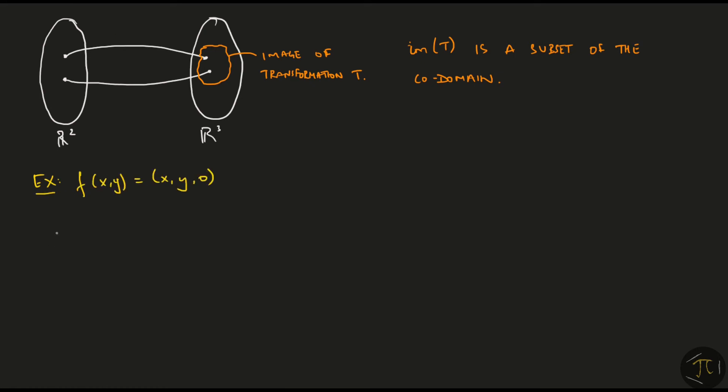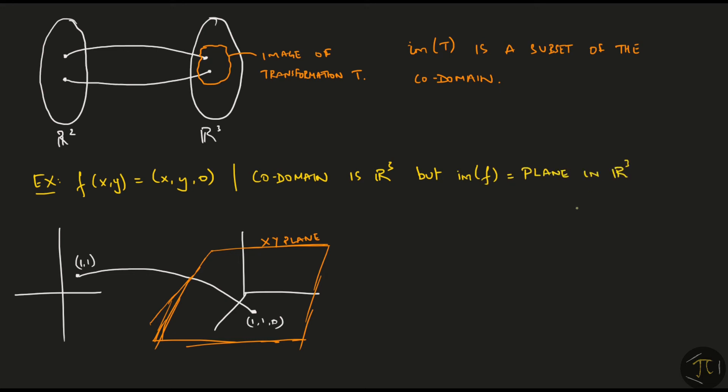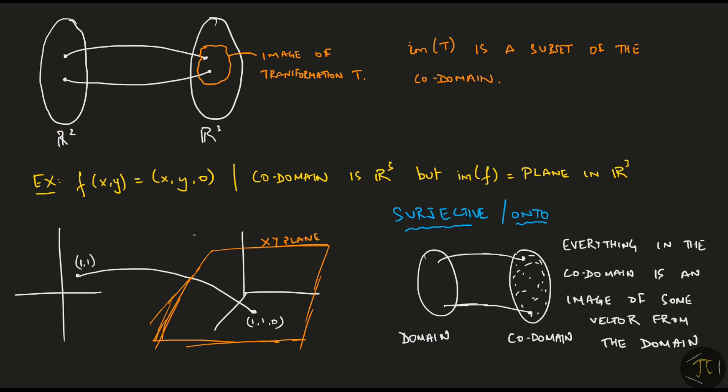Take this example here. Every vector in the 2D space is mapped to some vector in the 3D space. Like (1,1) is mapped to (1,1,0). All vectors get mapped to the xy plane only. So even though the codomain is R³, the image of f is not the entirety of the codomain. From your calculus days, remember when a function is called surjective or onto, if I were to choose any point in the codomain, I can always find at least one point in the domain to which it is an image. So everything in the codomain is an image of something in the domain. Our example here is not surjective though, since we have a lot of vectors in the codomain that are not an image of any vector in the domain.